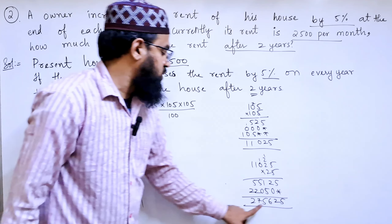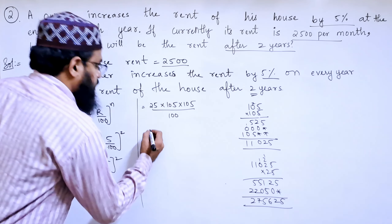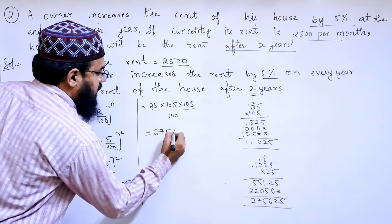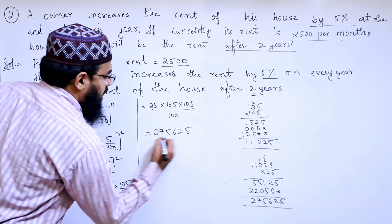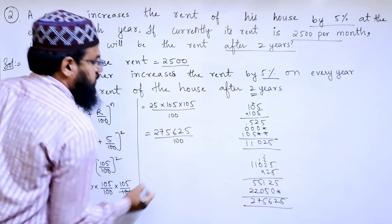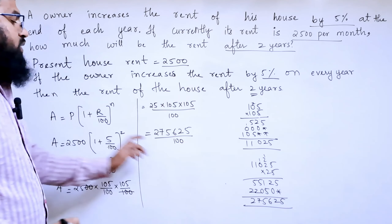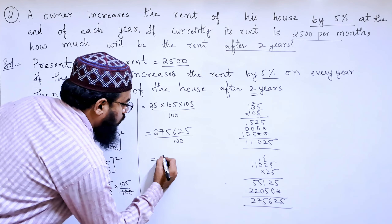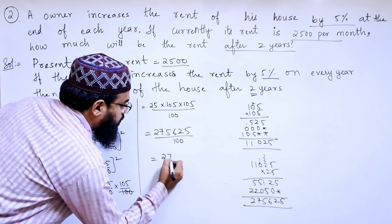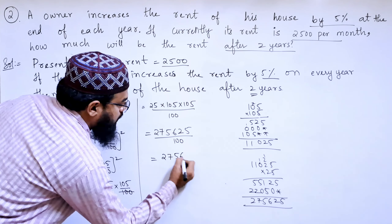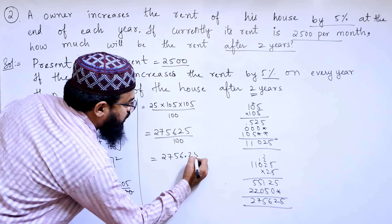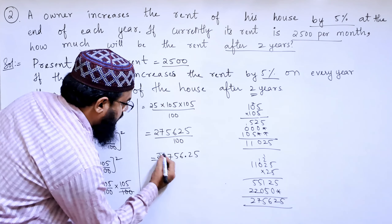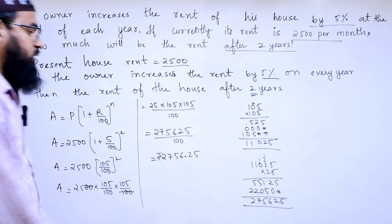So the answer is 275,625 by 100. Since we have two zeros in the denominator, we will put the decimal before two digits. So the rent after two years will be ₹2,756.25.